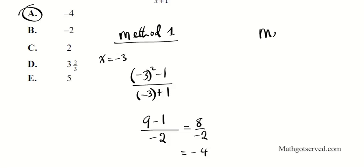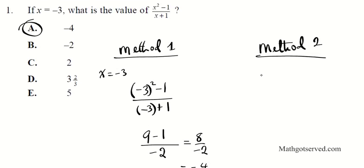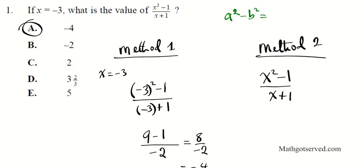Let's try method 2. Method 2, although quicker, requires that you know your factorization rules. If you examine the numerator, x squared minus 1, you notice this is the difference of squares. If you know your factorization rules, you remember that a squared minus b squared can be factored into a plus b times a minus b.